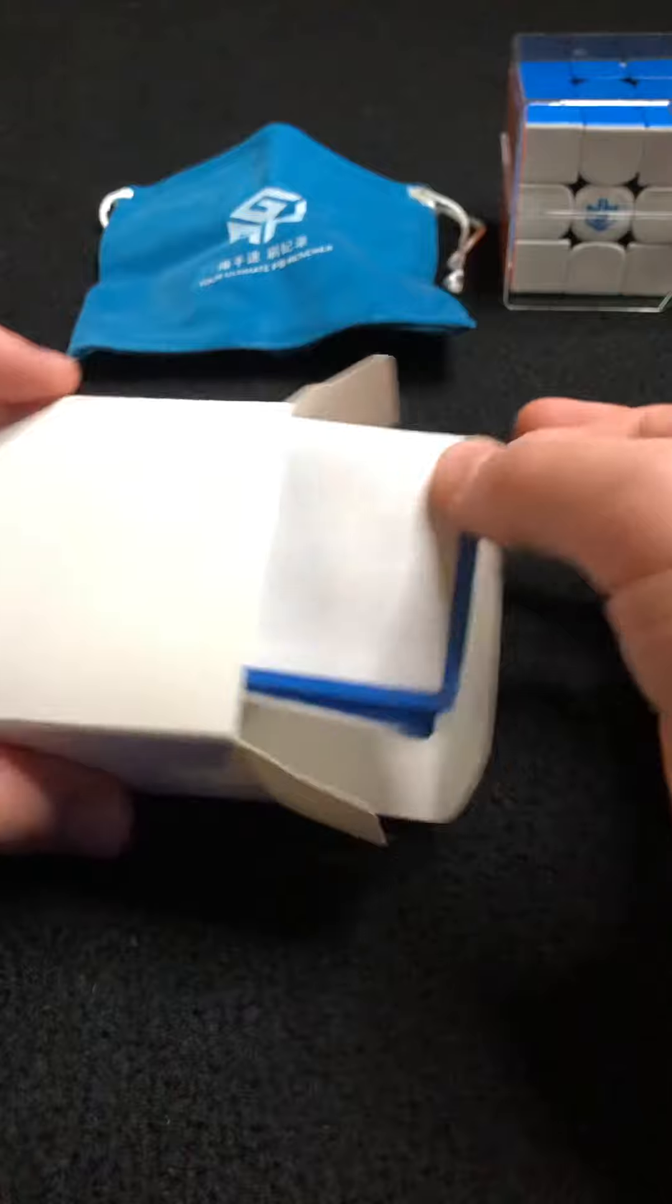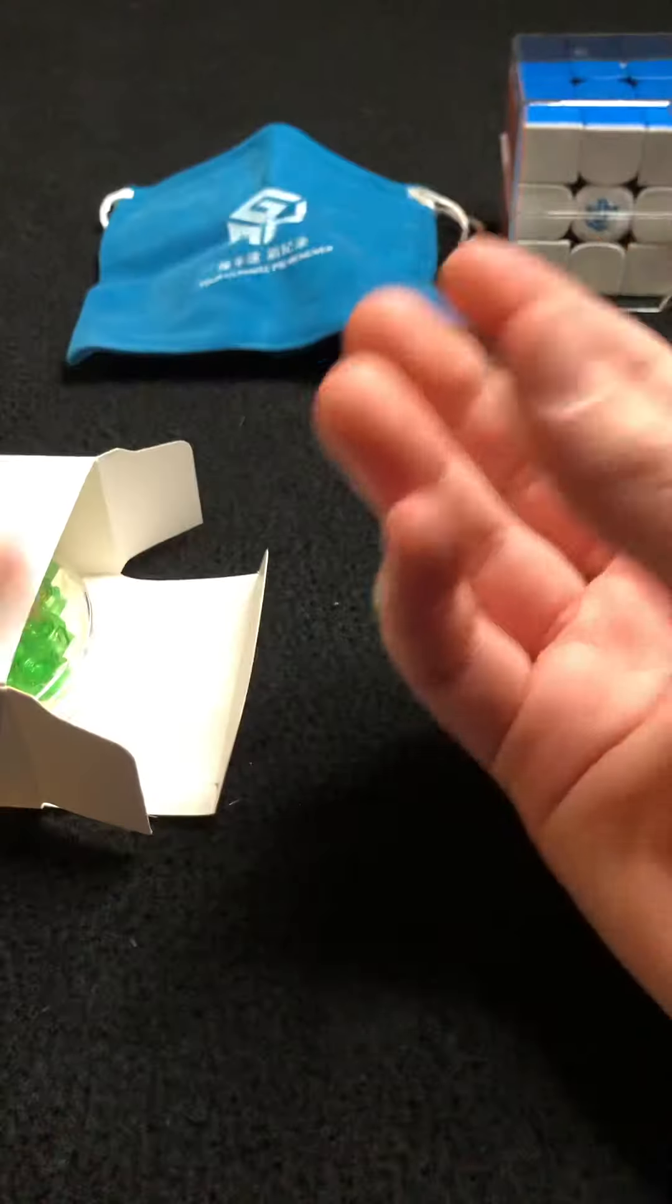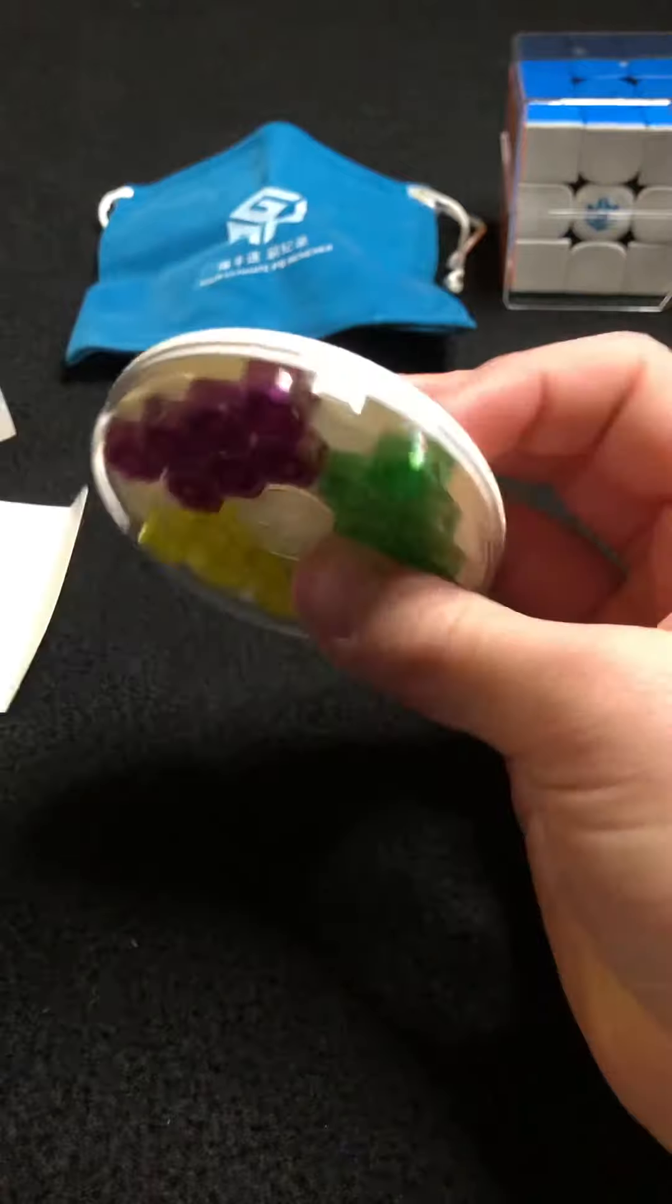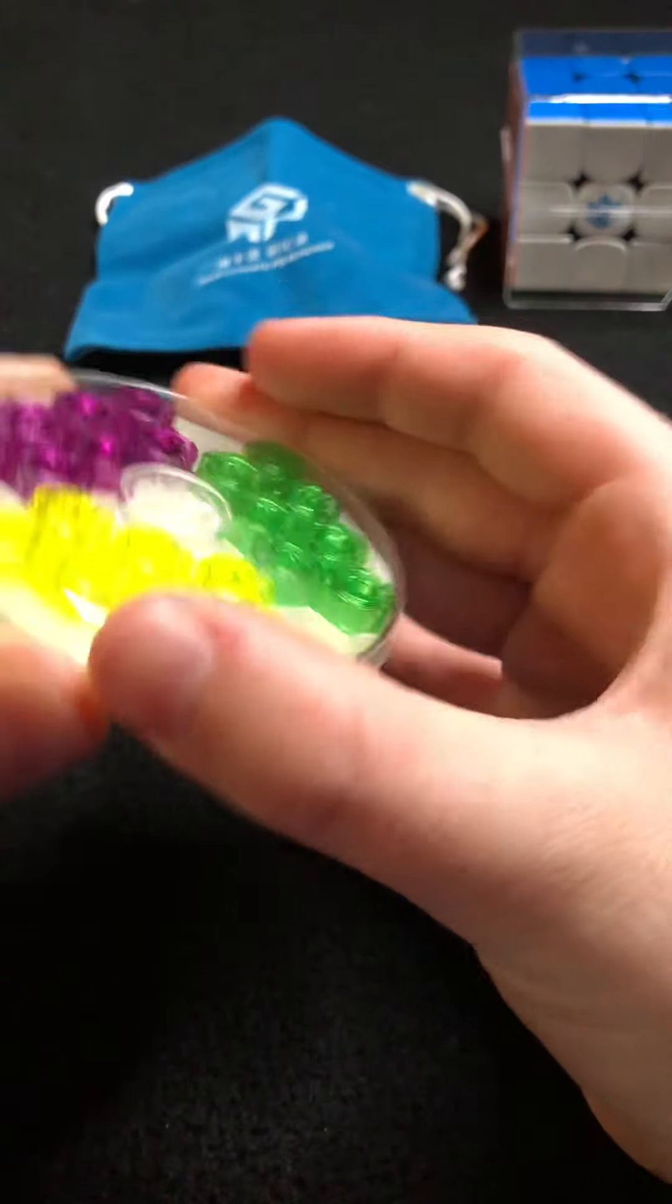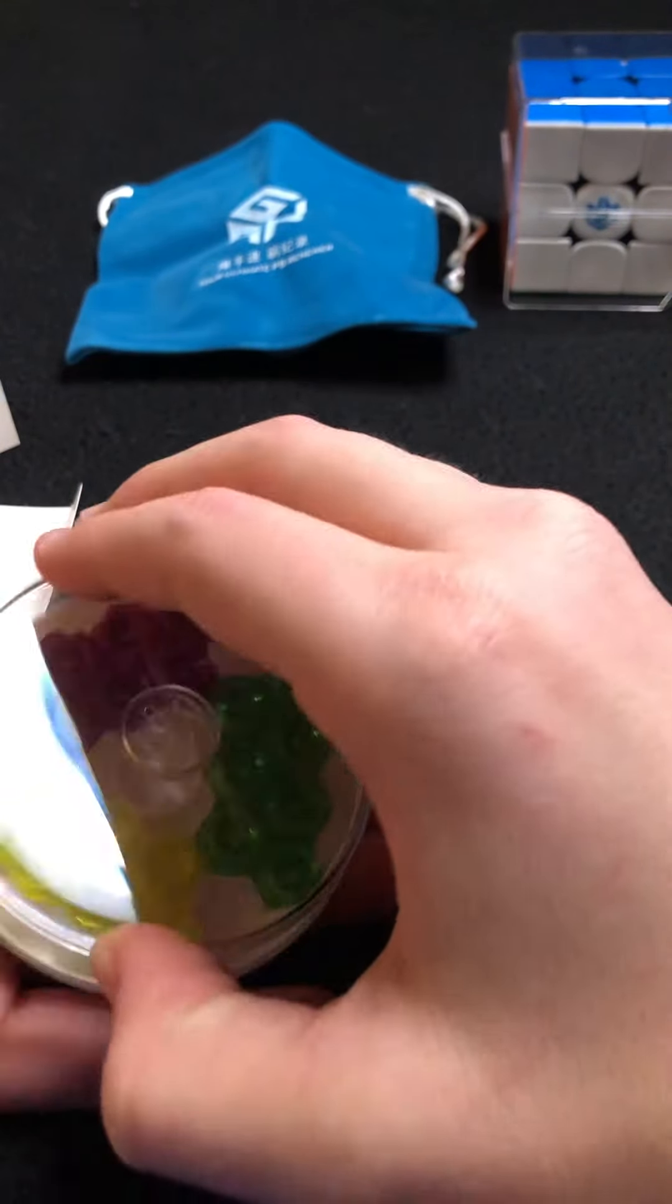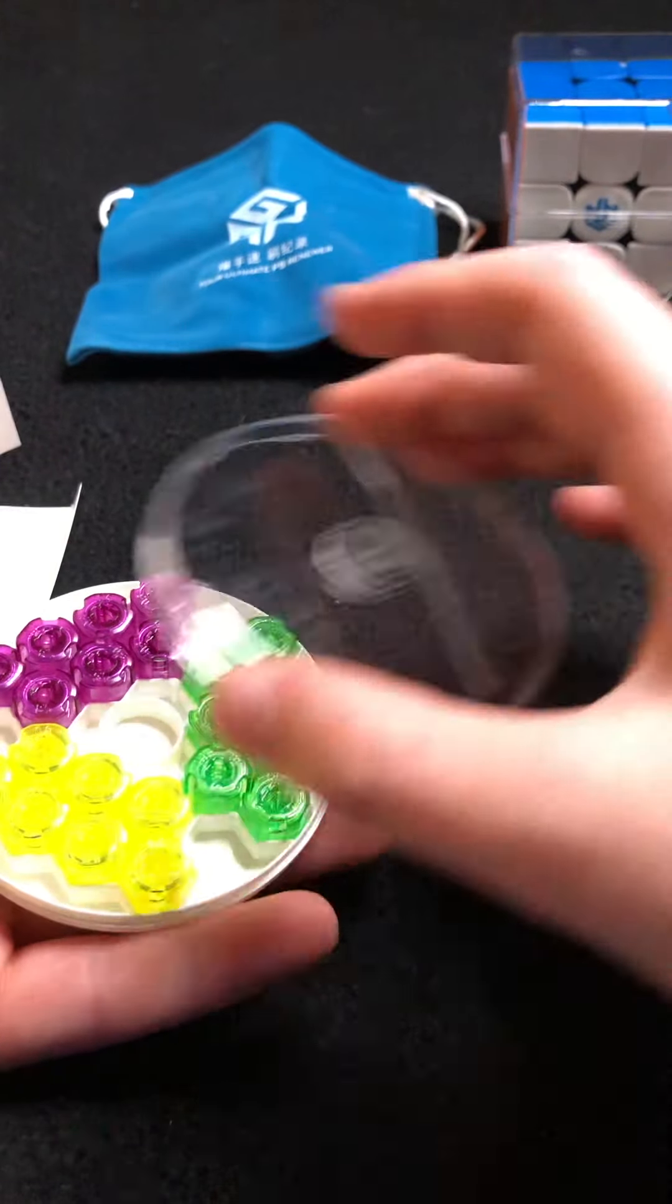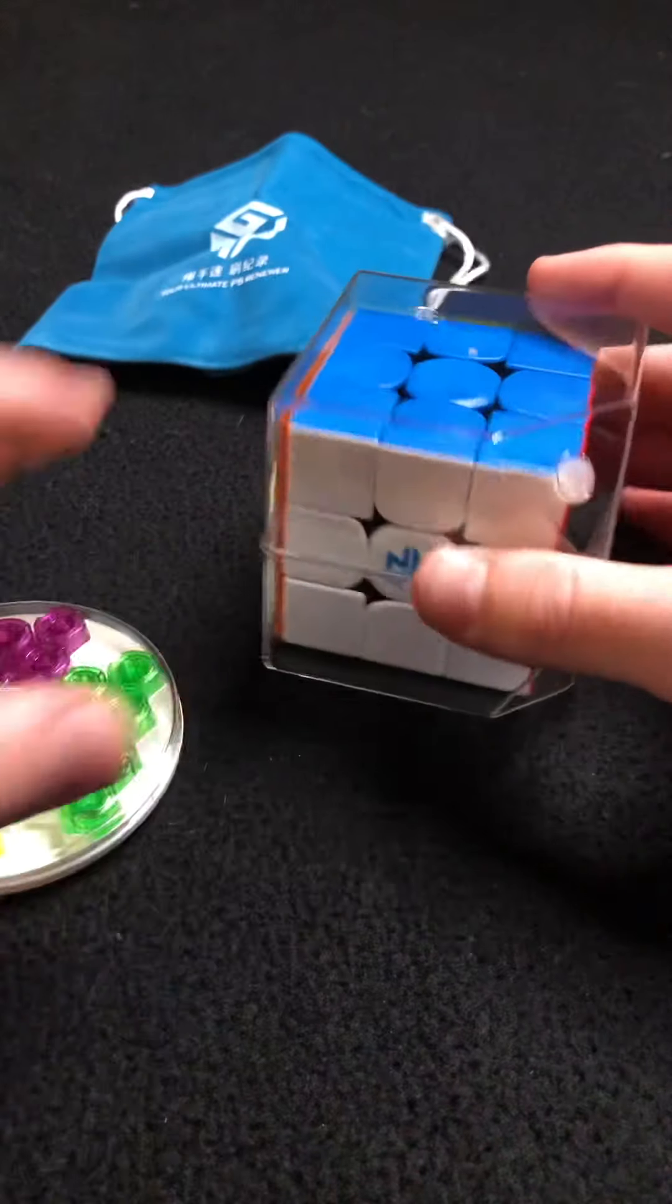It comes with an instruction manual on how to change this, on how to solve the cube. You obviously do not need that. Last but not least, this is probably the coolest factor of this cube: it comes with interchangeable magnets. Let me just slide this cap off. We have all these magnets, or springs sorry. We have all these springs and, like I showed you before...